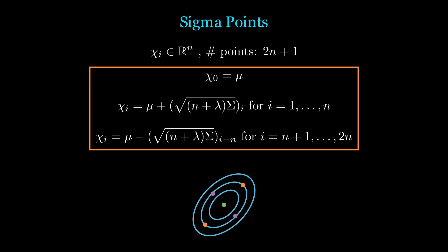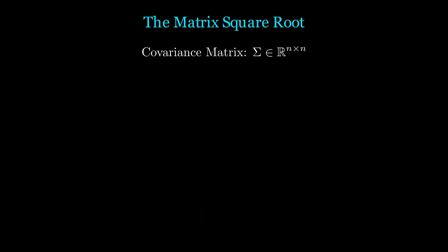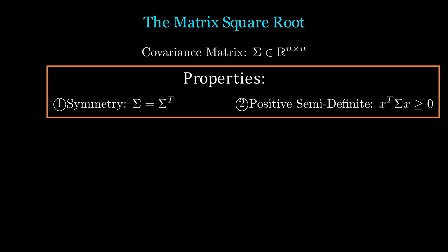Note, square root of sigma is the matrix square root, and the ith index stands for the ith column. To understand the matrix square root, we need to understand some properties of the covariance matrix.